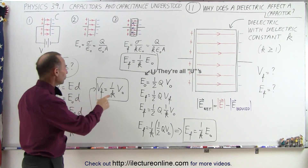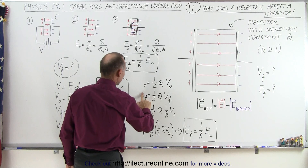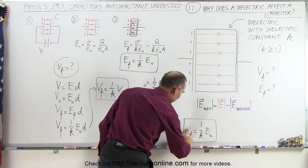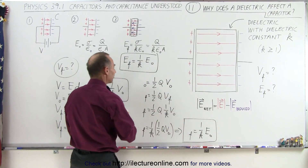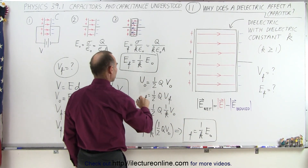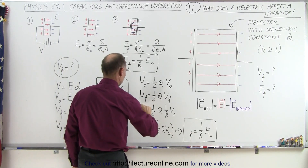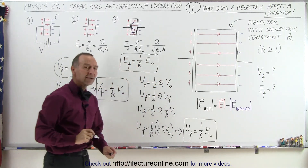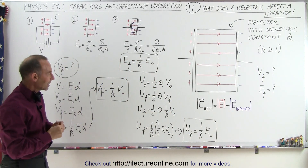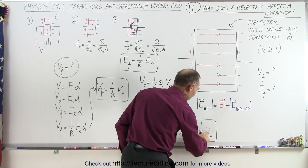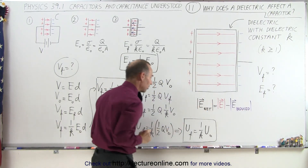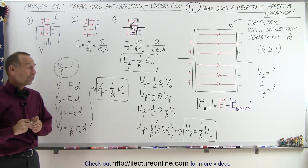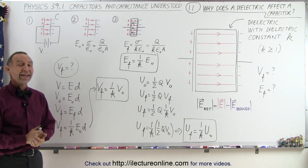I'm going to avoid confusing people by using E for energy when we're dealing with electric fields. In this case, I'll use U for energy instead, so we don't confuse anybody. The energy stored on the capacitor is one over k times the initial energy — written as U_final equals one over k times U_initial — and that's how it's done.